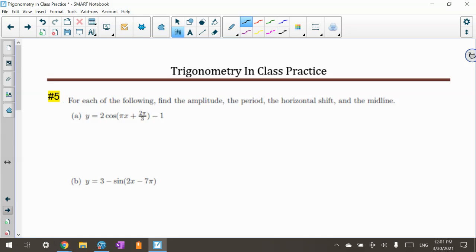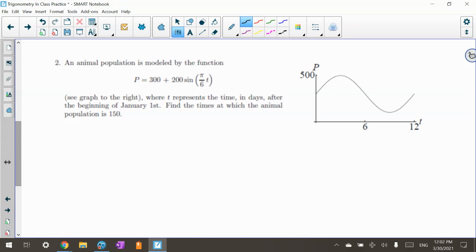So number 5 here, there's some shifts, but I want to go all the way down here to this animal population. I actually gave you the equation. So I said the population of an animal is modeled by this function, 300 plus 200 sine π over 6t. See the graph to the right, where t is the number of days after the beginning of January 1st. So here's 0, which is January 1st. So that's kind of important, because if January 1st is 0, that means January 2nd is 1. So you've got to be careful with that.